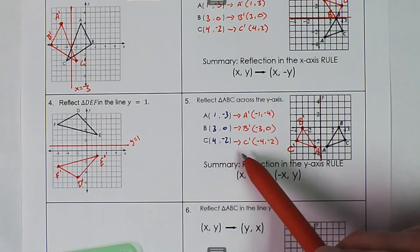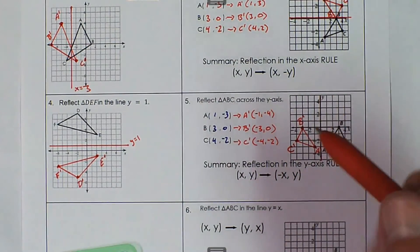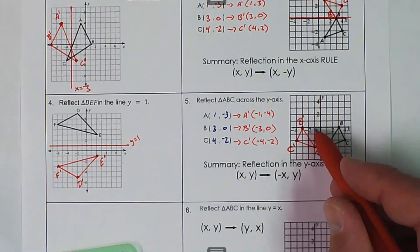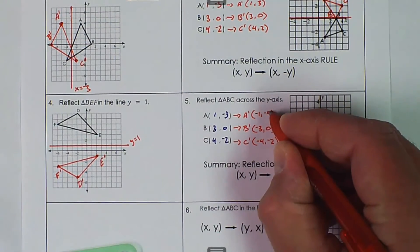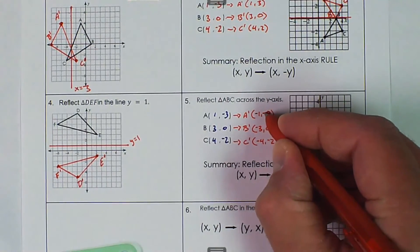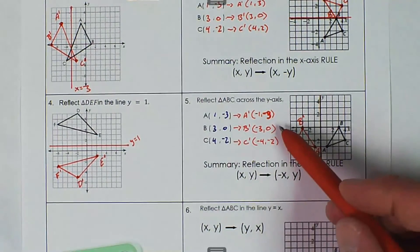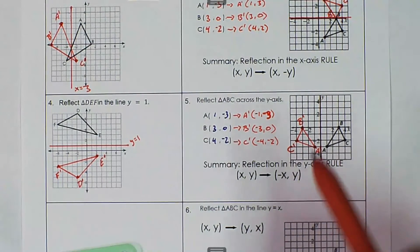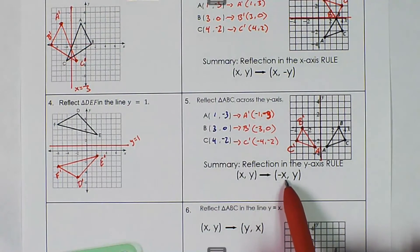A's value — I wrote that down as negative 4, but really A prime should be negative 1. One, two, three — should be negative 3 for x — so I wrote that one down wrong. Should be negative 3 for B prime's x. The y values don't change, and that's exactly what the rule shows: x goes to negative x, y stays y.